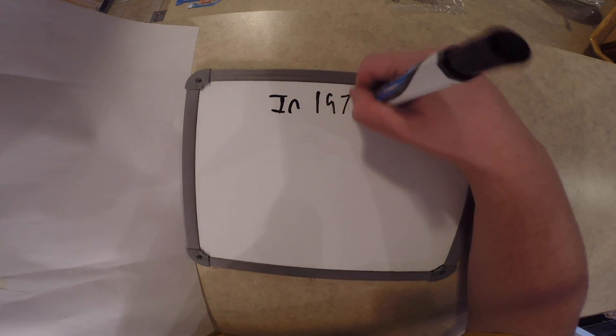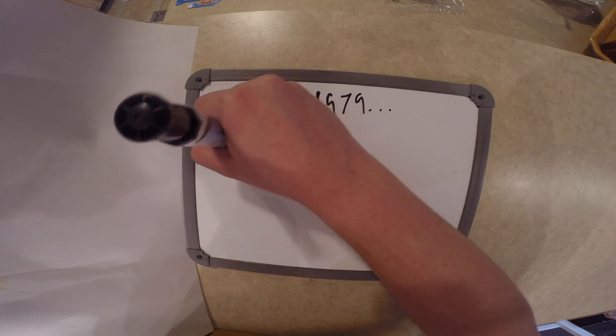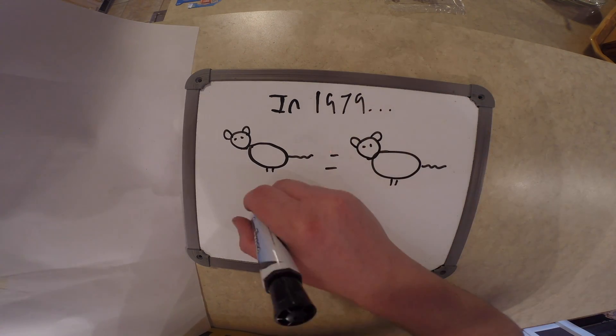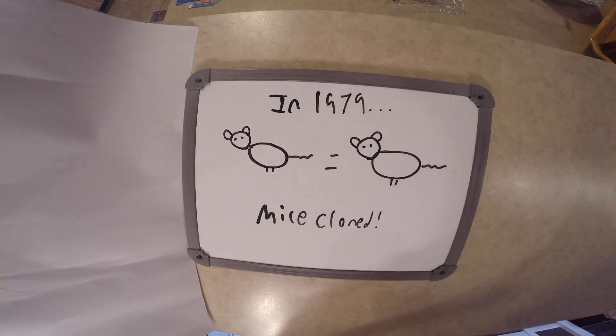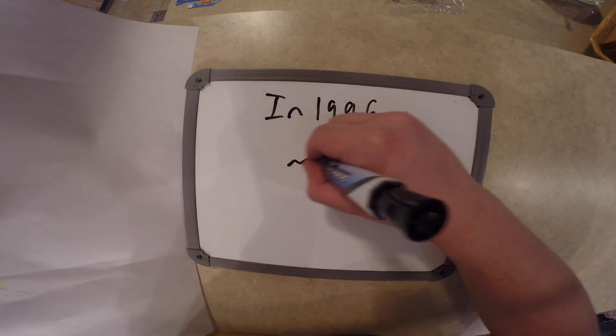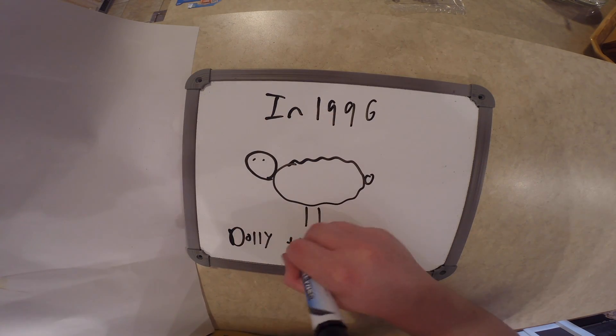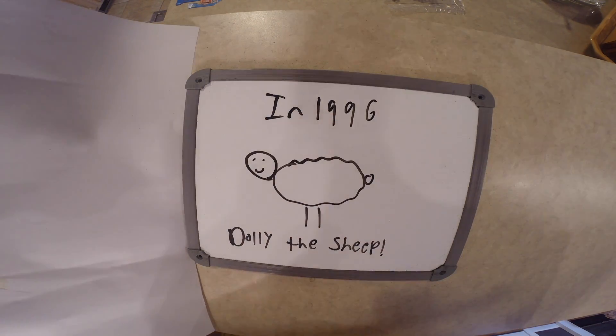Cloning, while certainly not perfect, has been in practice for many years. As early as 1979, genetically identical mice had been successfully born by scientists. And in 1996, the famous Dolly the Sheep was the first animal cloned by using the method of placing an adult cell into an egg cell.